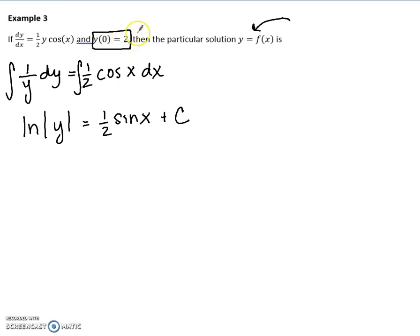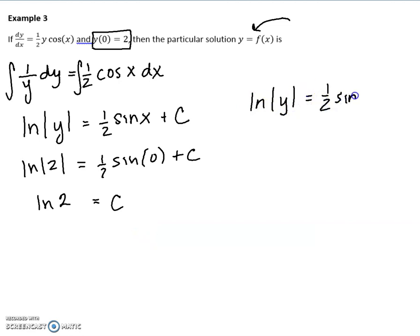So this is why I have my initial value. Let's plug in our initial value. We have 2 for y, and we have 0 for x. Sine of 0 is 0, so you have c equals ln of, and now you can drop the absolute value, because you know 2 is a positive number. Once you know it's just a constant, you're good. So then I've got ln of y equals 1 half sine of x plus ln 2.